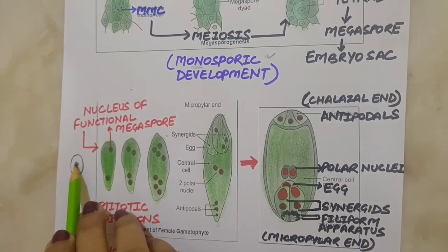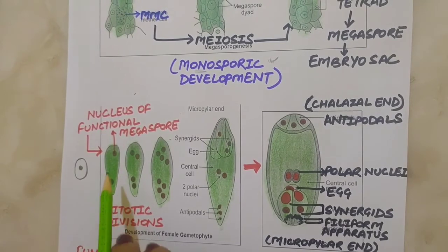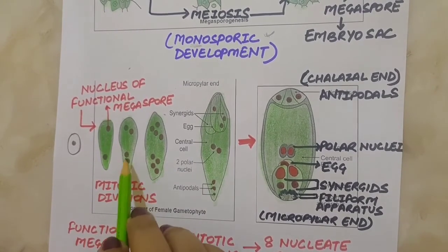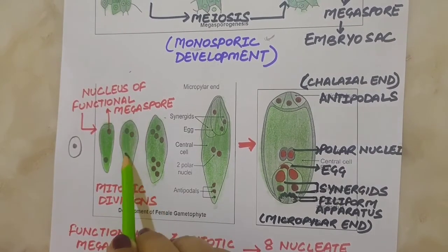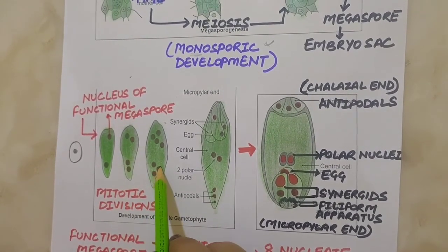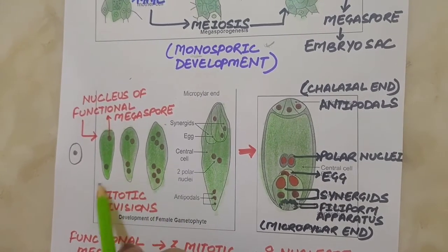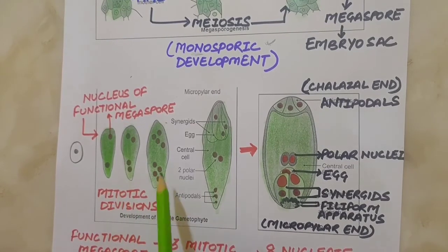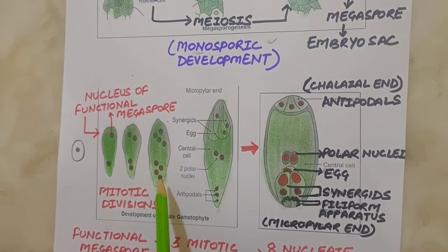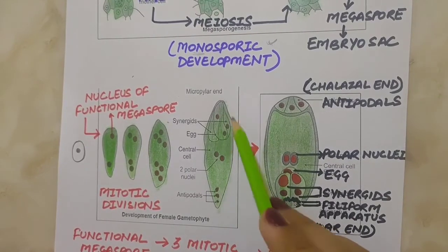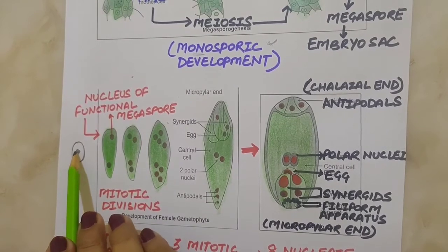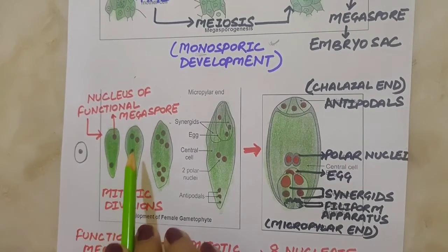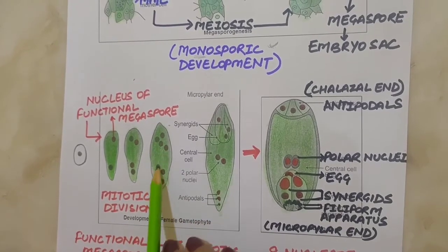The nucleus of the functional megaspore divides mitotically to form two nuclei which move to opposite poles, forming the two-nucleate embryo sac. Two more sequential mitotic divisions result in the four-nucleate and later the eight-nucleate stage of the embryo sac. These mitotic divisions are strictly free nuclear — meaning nuclear divisions are not followed immediately by cell wall formation. After the eight-nucleate stage, cell walls are laid down, leading to organization of a typical female gametophyte or embryo sac. So our one functional megaspore undergoes three mitotic divisions: first gives 2 cells, second gives 4 cells, third gives 8 cells.